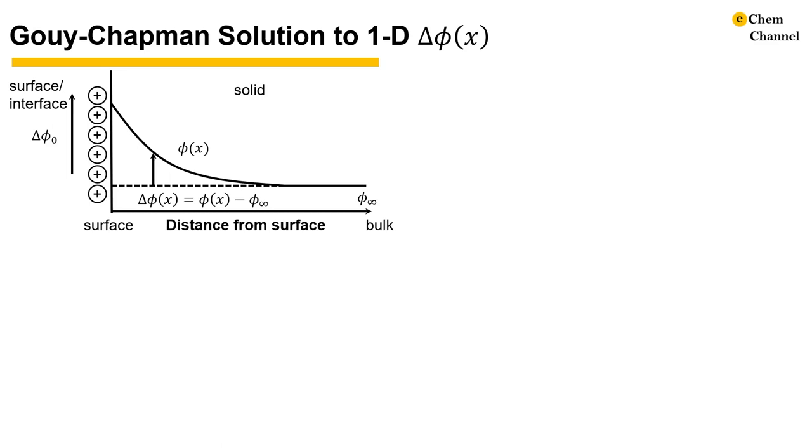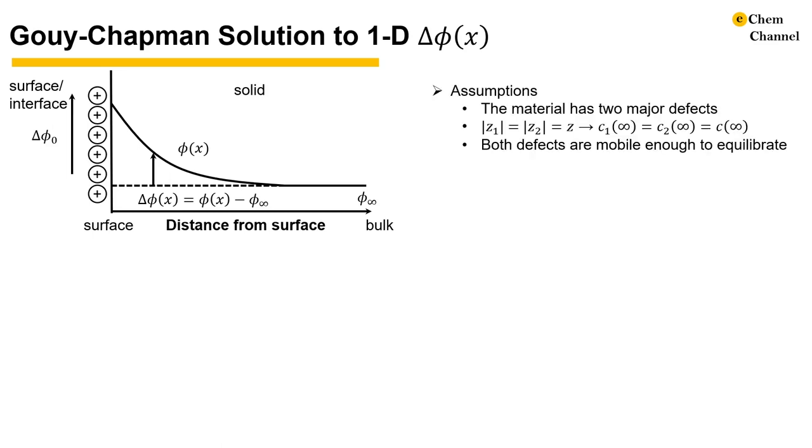We will come back with more stories on the double layer later. For the Gouy-Chapman model to work, it is assumed that two major defects exist in the material, and they have the same absolute value of the valence. It also means in the bulk, the two defects will have the same concentration.